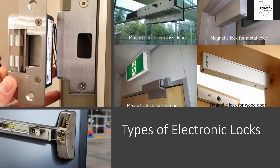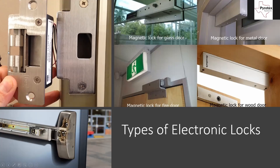Another option is electronically controlled door strikes, which are mounted on the door frame. On the right is a typical door strike like you'd find on any commercial door; on the left is an electronic replacement. When the lock is released by keypad, card reader, or fire alarm override, this part folds back so you can pull the door free without a key.